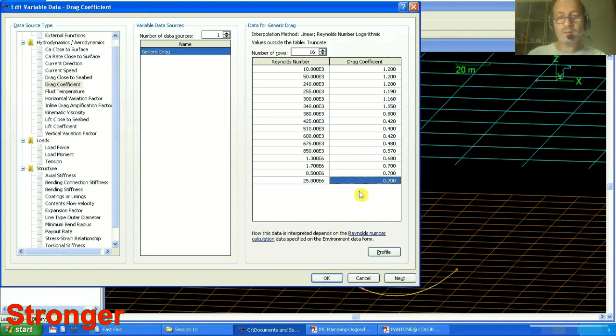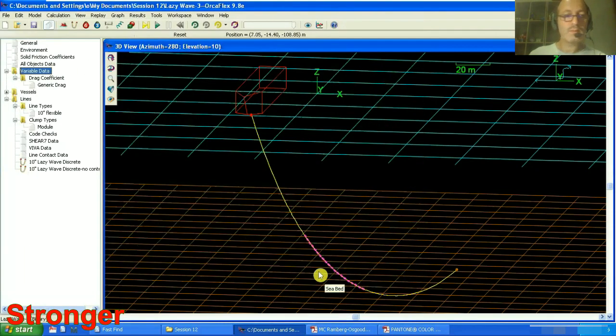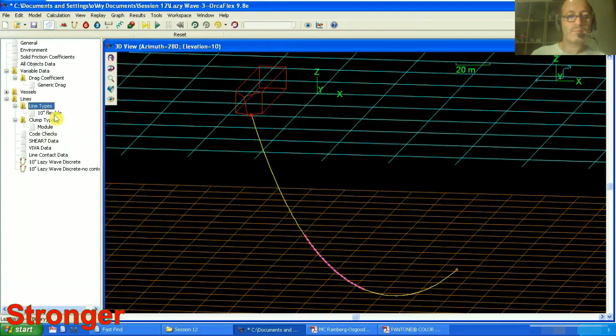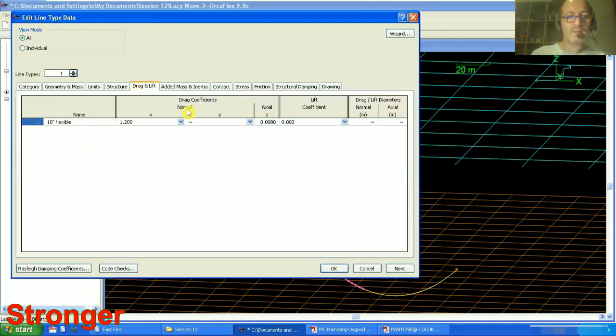Okay, by this one, the whole data are filled. I can see the profile and now we can use it in the line type. In the line type, we go to drag and lift up, and here in drag coefficients, you can select this generic drag, press okay.